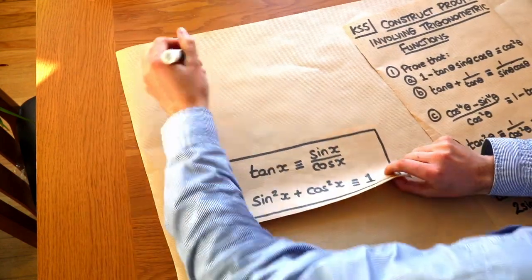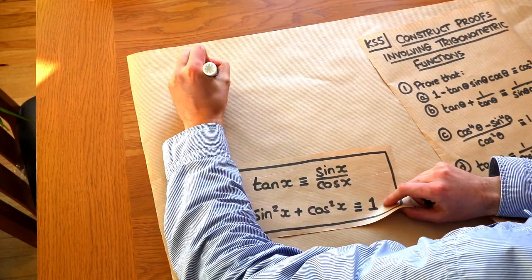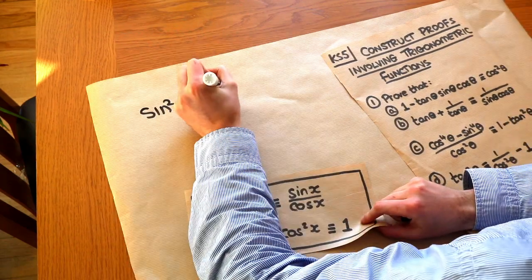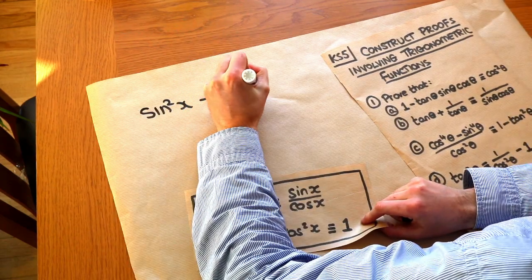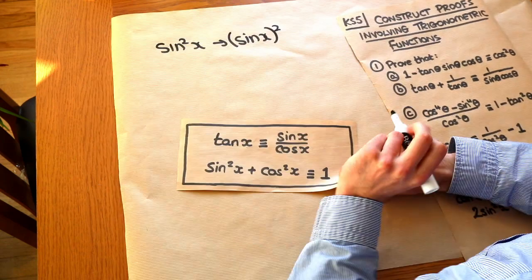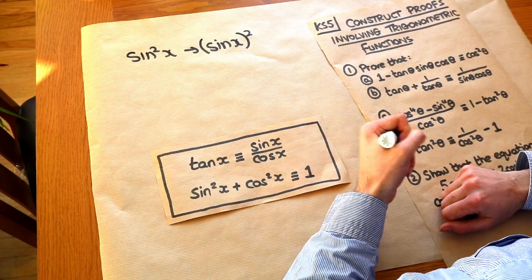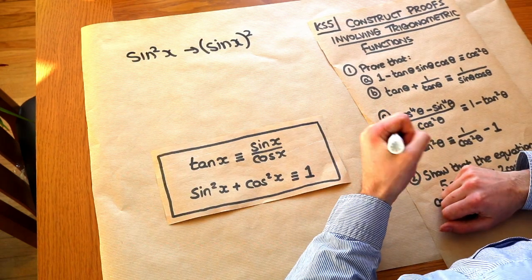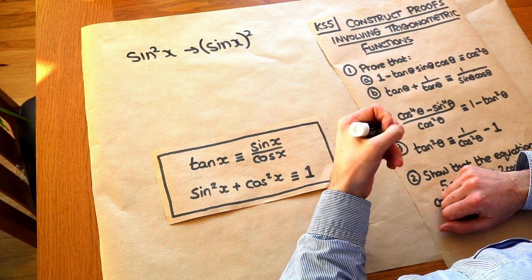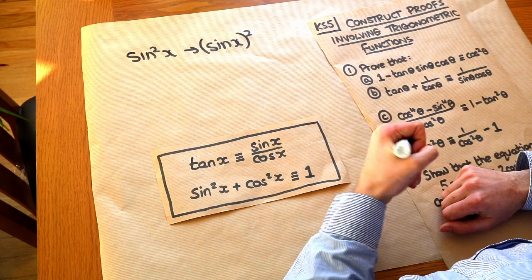Just as a reminder about notation, when we write sin squared of x, that means you have sin of x all squared — that's just a notational convenience. Note also that we're not going to be covering trigonometric identities involving reciprocal trig functions such as cosec, cot and sec.